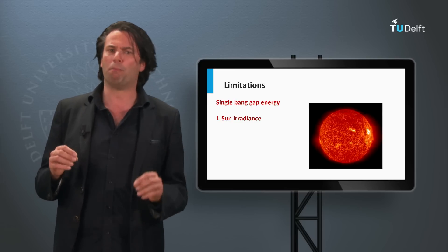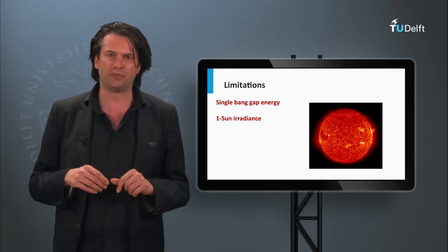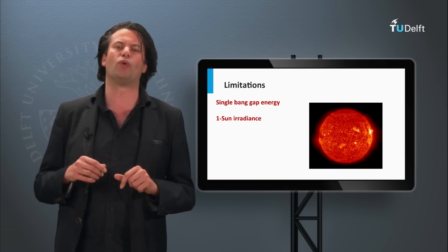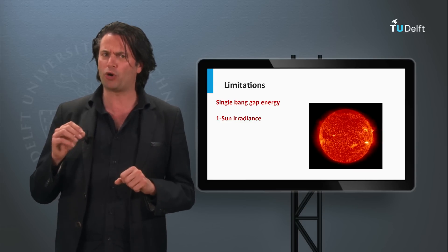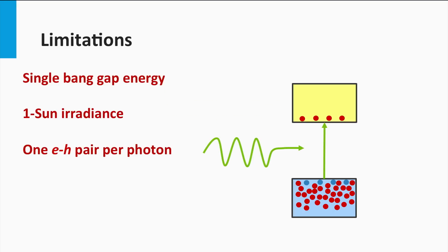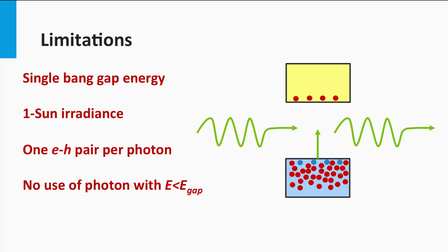Secondly, most solar cell concepts are based on irradiance incidence of one sun. Higher irradiance means more current generation. Thirdly, every photon only excites one electron in the conduction band, creating only one electron-hole pair. The energy of high-energetic photons could be utilized better if they would create more than one excited electron in the conduction band. Fourthly, the photons below the band gap are not used; they do not result in charge carrier excitation.